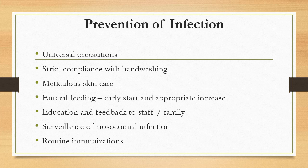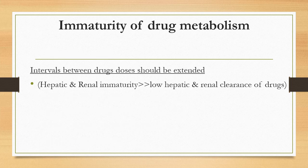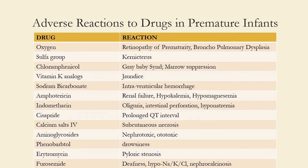All babies stable from a cardiorespiratory standpoint should receive routine immunization. Because premature babies have immature liver and kidneys, one must be very careful with drugs. Medications commonly used include oxygen, vitamin K, sodium bicarbonate, calcium salts, aminoglycosides, erythromycin, and furosemide — almost all carry associated risks. Drug levels may need to be monitored to ensure they remain within safe ranges.